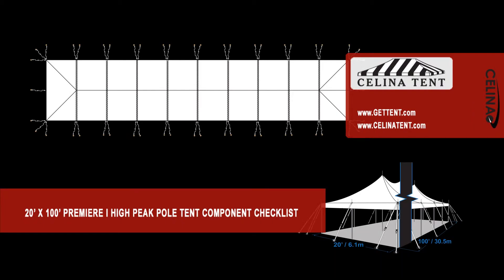This is an overview of the components required to set up a 20 foot by 100 foot Premier 1 Series High Peak Pole Tent from Celina Tent.